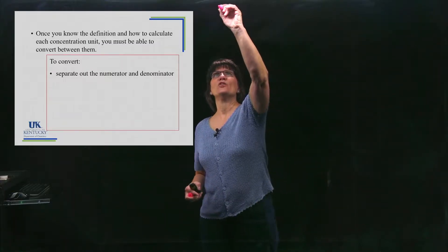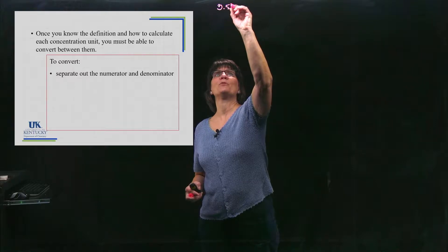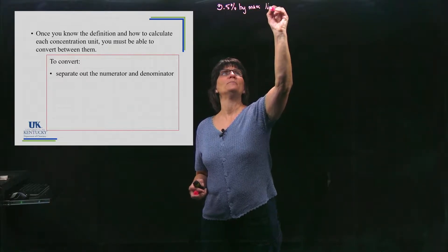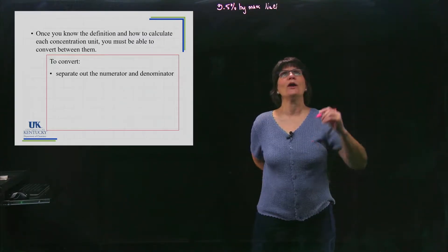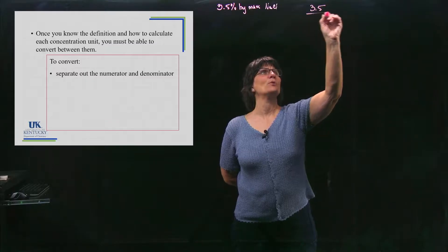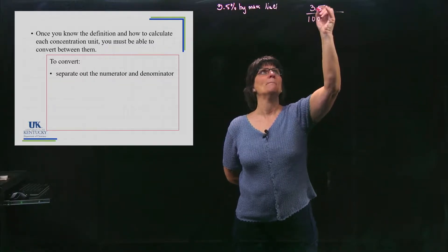Let me give you some examples. Let's say a solution is 3.5 percent by mass of sodium chloride. I want to separate that into a numerator and a denominator. Well the numerator is 3.5 and since it's percent, it's per 100.